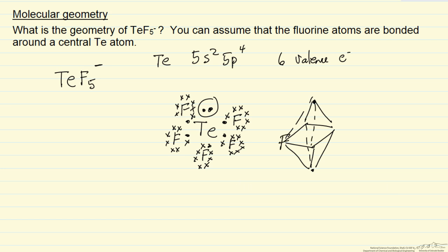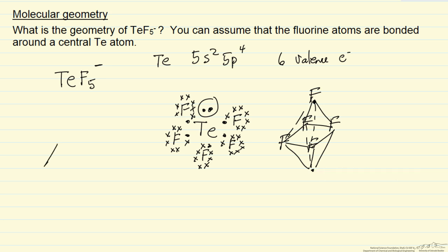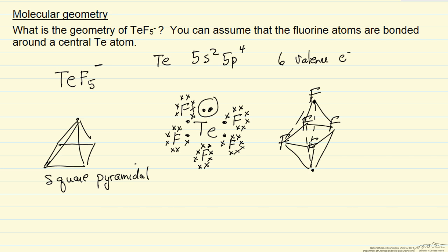So there are five fluorines arranged around the central atom. That structure — a square base with an atom above it — is square pyramidal. This structure is a square pyramid.